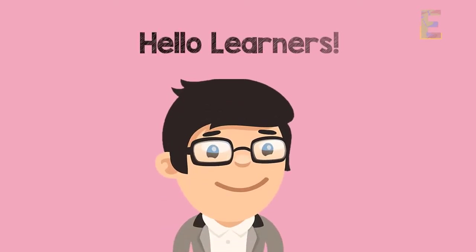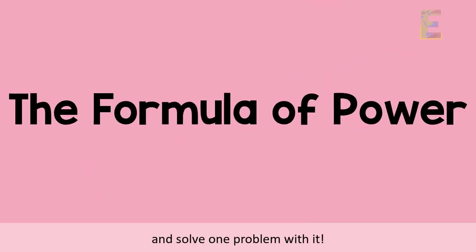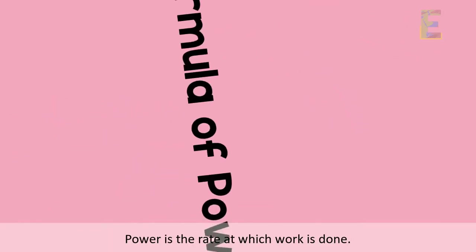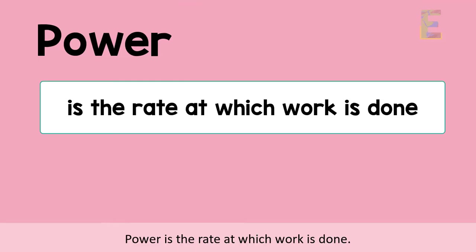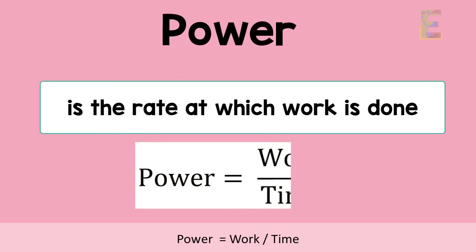Hello learners! Today we are going to talk about the formula of power and solve one problem with it. Power is the rate at which work is done. The power formula is: power is equal to work over time.